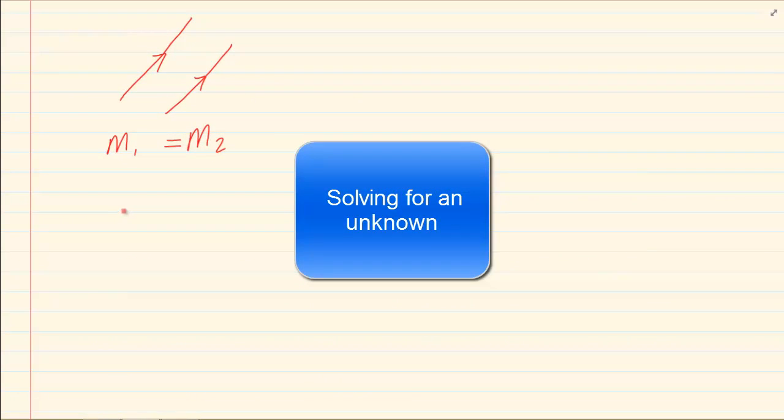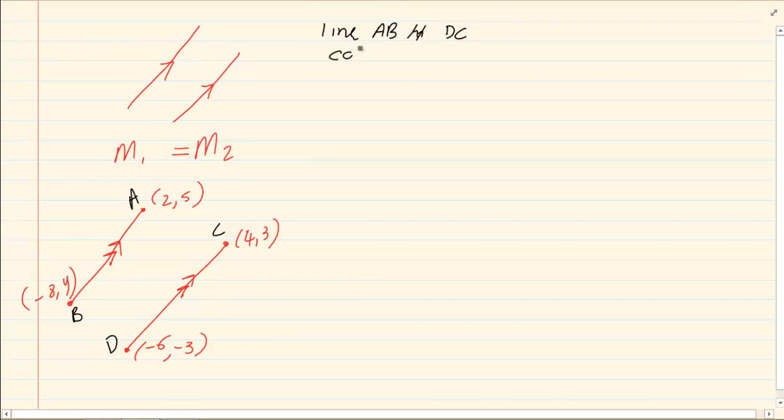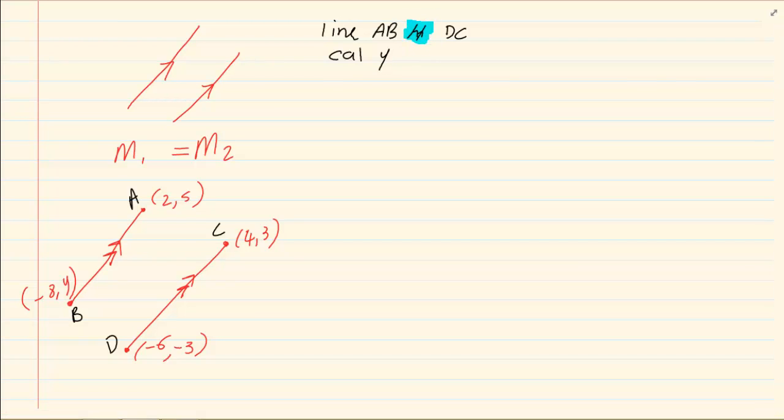Now, let's take the following two lines. If I gave you two lines and I'm telling you line AB is parallel to line CD, line AB is parallel to DC, calculate y. Now, when they tell us that it is parallel, immediately you must write down M1 is equal to M2. So we know the gradients are equal.